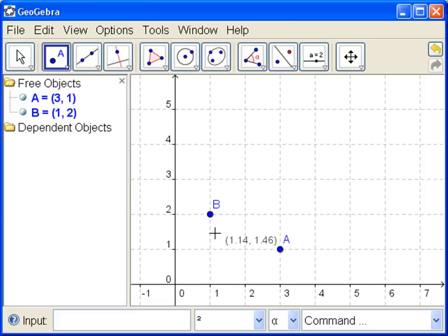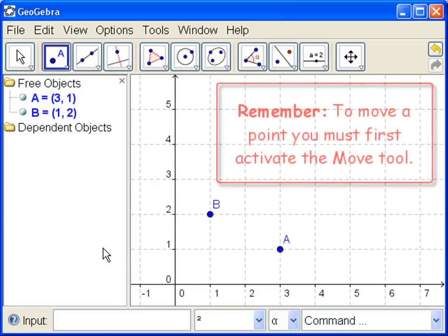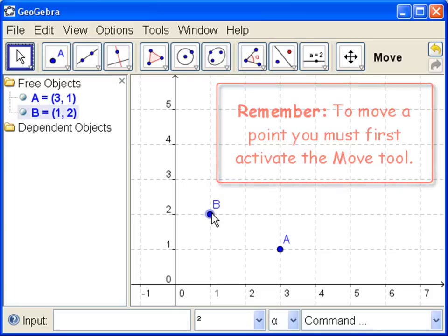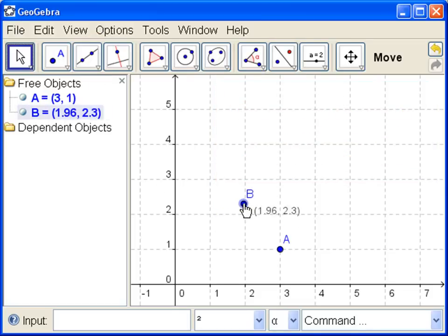These two objects are not dependent on each other so we can move them separately. If you want to move them though, remember to go to the move tool and then move. Click it and drag it and notice A doesn't move. A is independent of B.